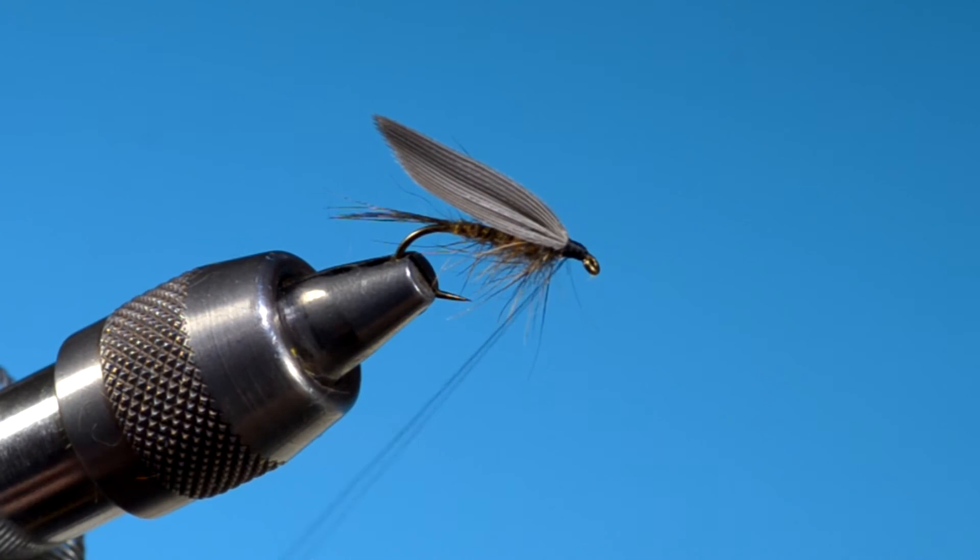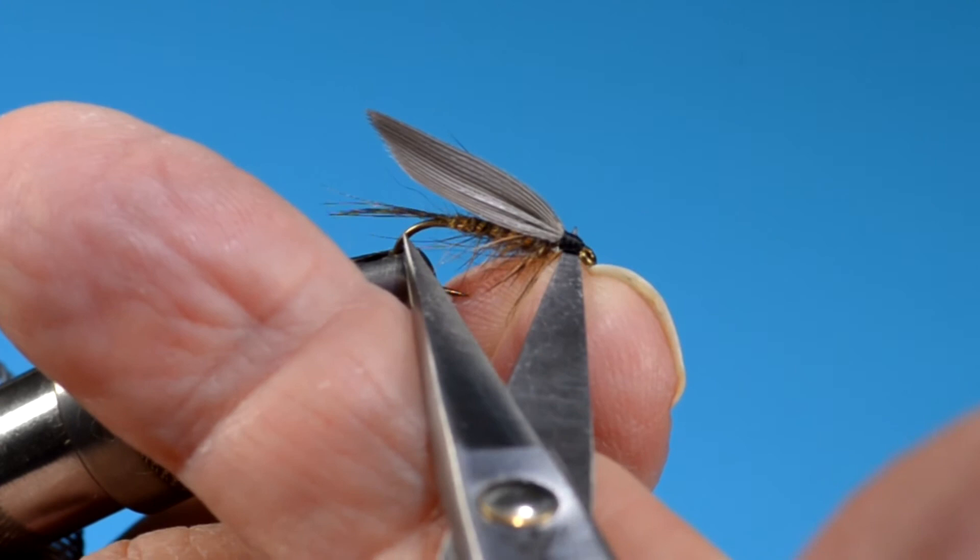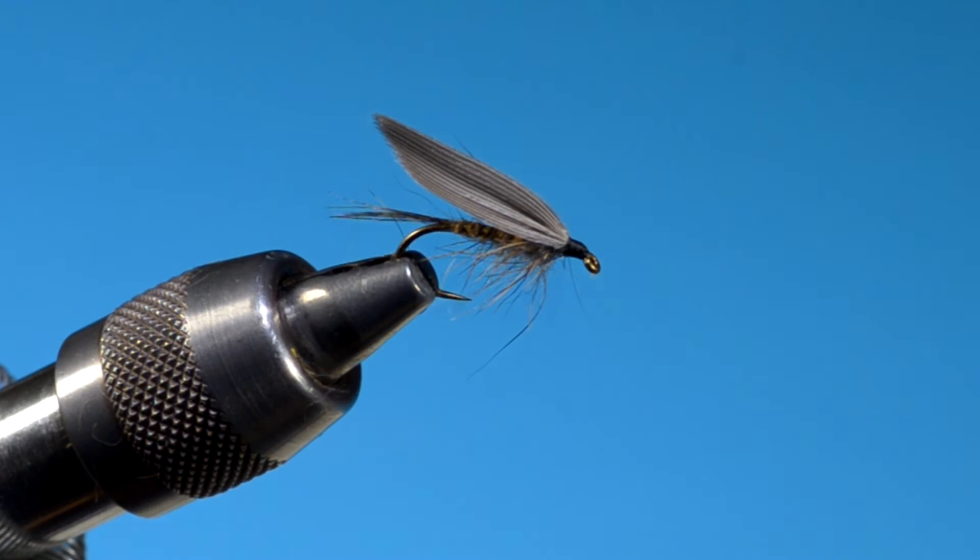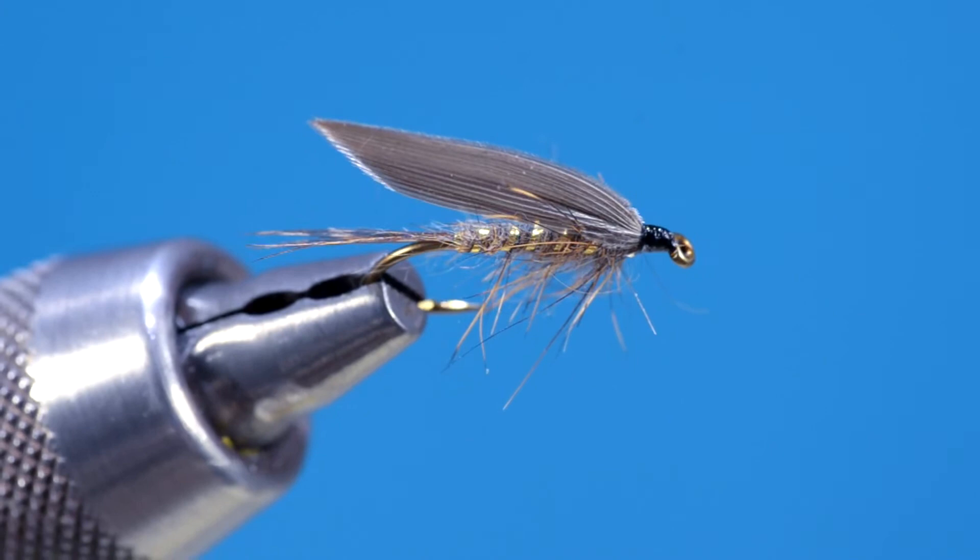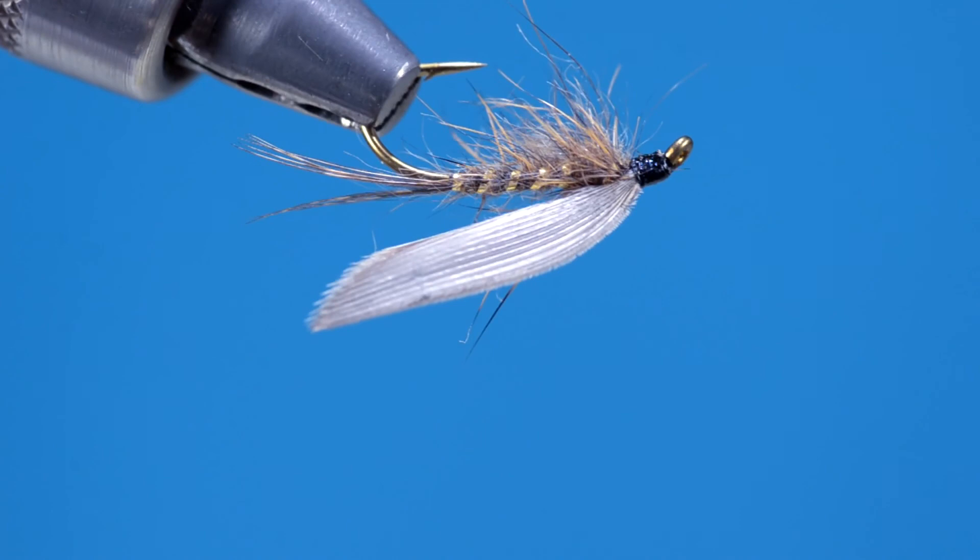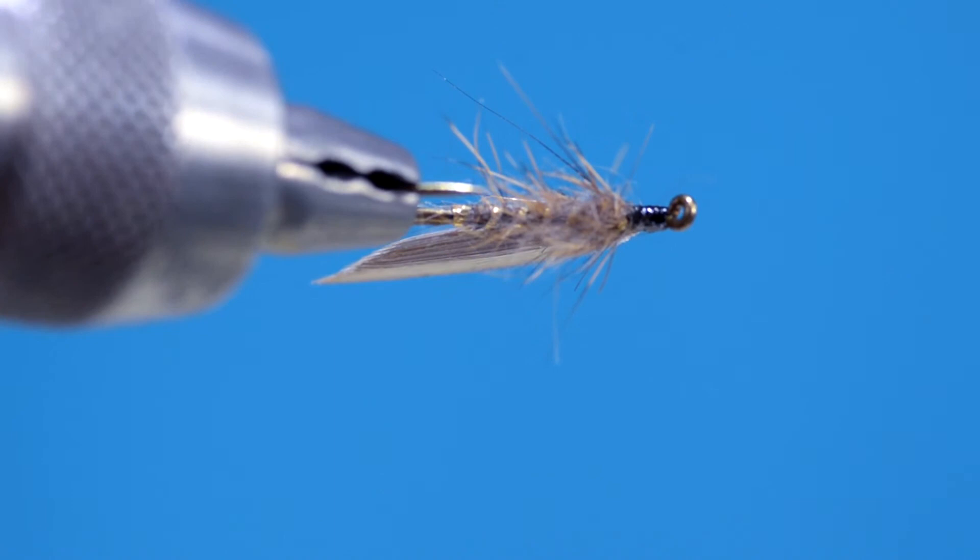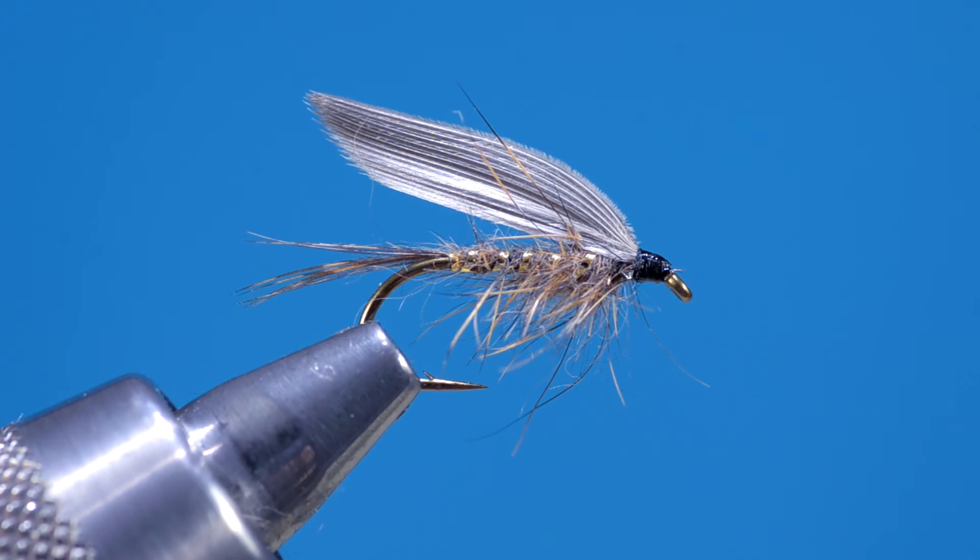Whip finish and cut the butts. We'll just glue this up with just a little bit of head cement to keep the wing from pulling out. It's a fishing fly. We're not going to go nuts trying to get a perfect head on this. We want it buggy. We want stuff sticking out everywhere. I really like the look of this. This will fish. And I hope you do this one. Have fun fishing it.